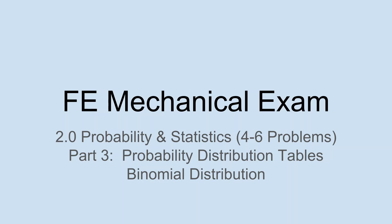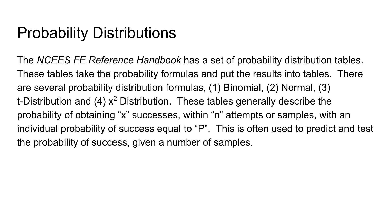The binomial distribution. The NCEES FE Reference Handbook has a set of probability distribution tables, and these tables take all the probability formulas and put the results into tables. There are several probability distribution formulas: the binomial, normal, t-distribution, and the chi-squared distribution. Generally, these tables describe the probability of obtaining success within n number of attempts, samples, or degrees of freedom, with an individual probability of success equal to p.